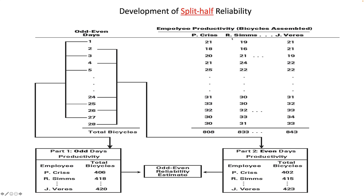Looking at the data: on Day 1, Chris did 21, Sims 19, Vera 21; on Day 2, Chris did 18, Sims 16, Vera 21. For the month, Chris totaled 808, Sims 833, and Vera 843. The odd-day score for Chris is 406 and the even-day score is 402; Sims has 418 and 415; Vera has 420 and 423. The reliability estimate is the Pearson correlation between these odd and even sets of scores for each respondent.